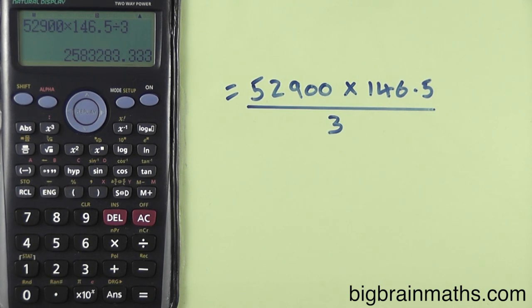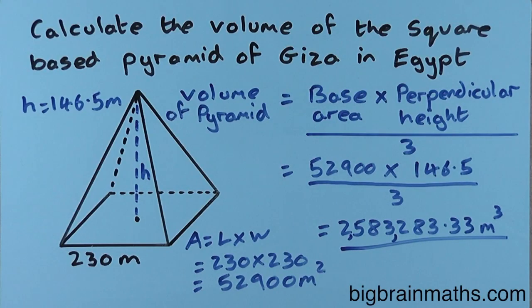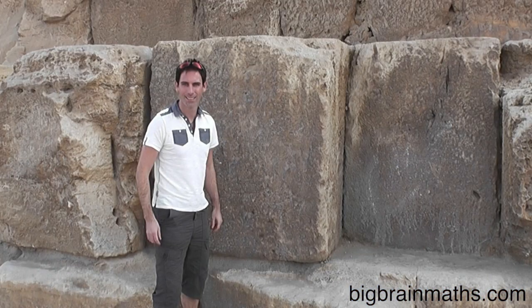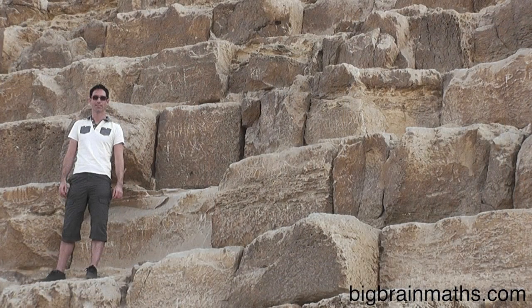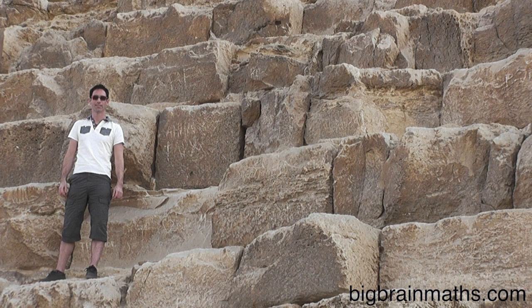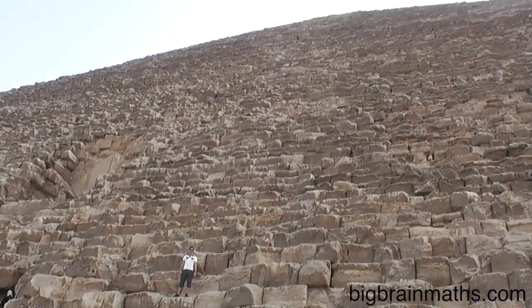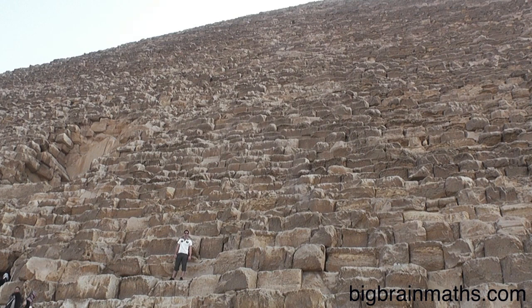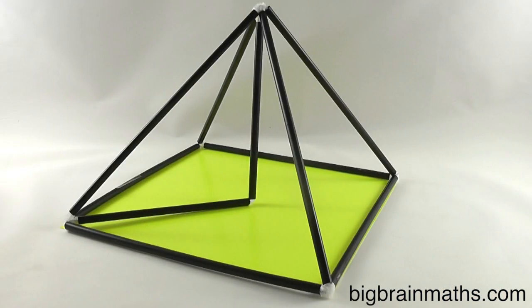My final answer is 2,583,283.33 meters cubed. This is a massive volume and this answer actually means that the pyramids are made from over two and a half million of these blocks of stone.